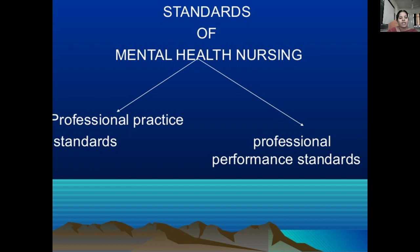There are two types of standards in mental health nursing settings: number one, professional practice standards, and number two, professional performance standards. Practice means at the bedside — providing care, we follow the nursing process. Professional performance means we update our knowledge by attending conferences, workshops, and doing research activities. We will see them one by one; first is professional practice standards.